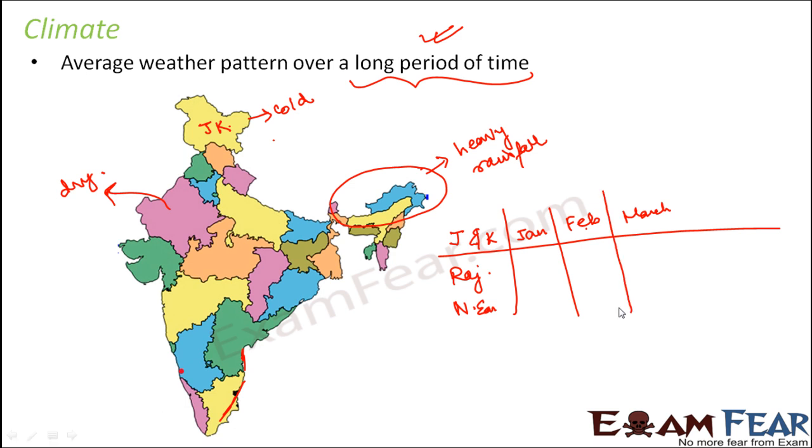So again, weather changes day to day. So even in January, you will observe the weather patterns of every day. So that's how you get an idea about the weather in January, weather in February, weather in March.